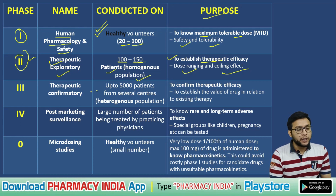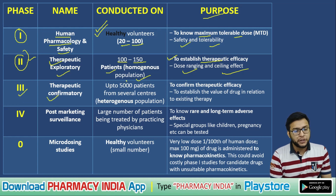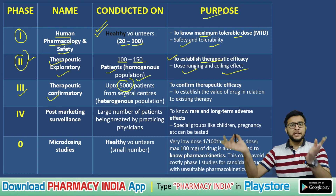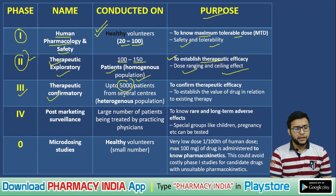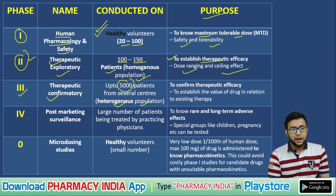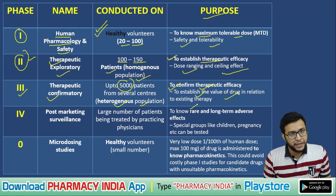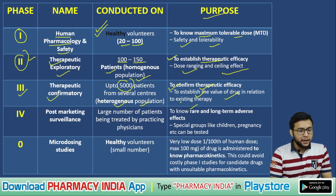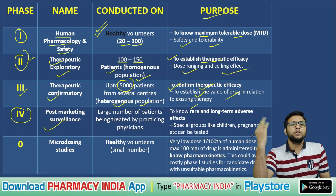Phase 3 is called Therapeutic Confirmatory. It involves up to 5000 patients drawn from several centers using a heterogeneous population. The purpose is to confirm therapeutic efficacy and to establish the value of the drug in relation to existing therapy.